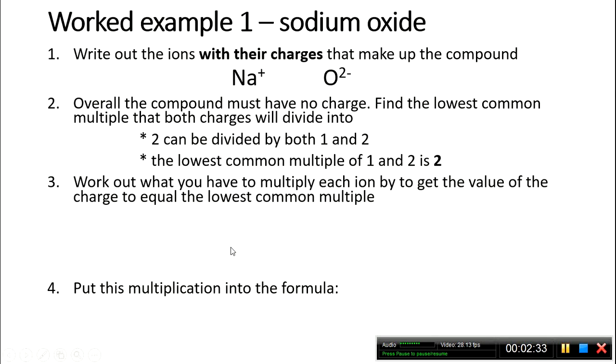Now, work out what you have to multiply each ion by to get the value of the charge to equal the lowest common multiple. To get this 1+ charge to equal 2, we have to times it by 2.